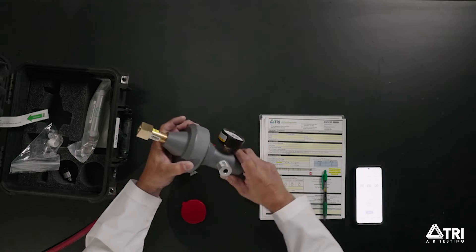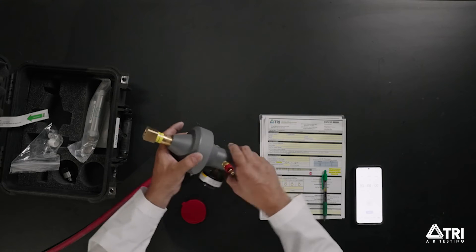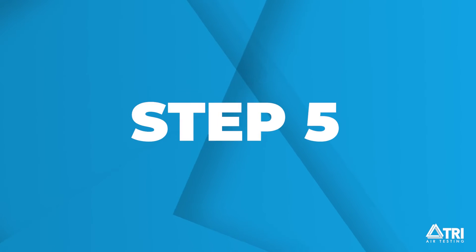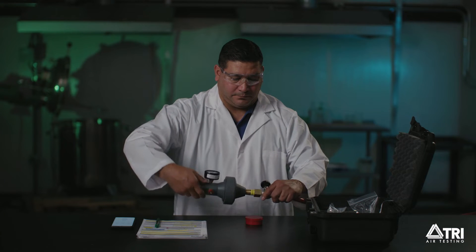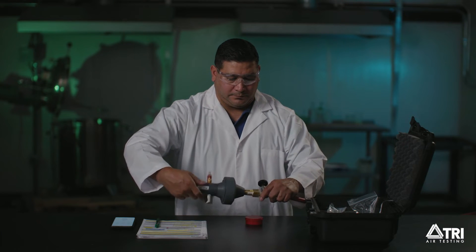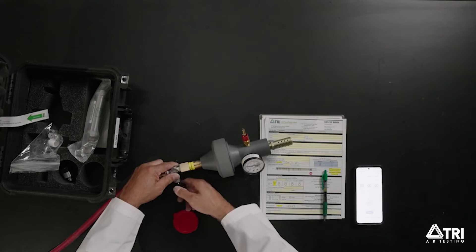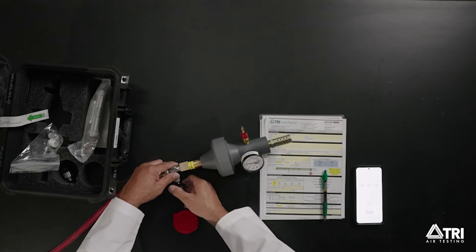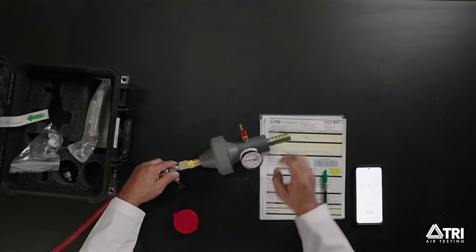Step 5: Connect the complete unit to your gas source. Open the gas source valve slowly and allow the pressure on the flow section gauge to stabilize in the specified PSI range. Run the sample according to the time specified on your instruction sheet.